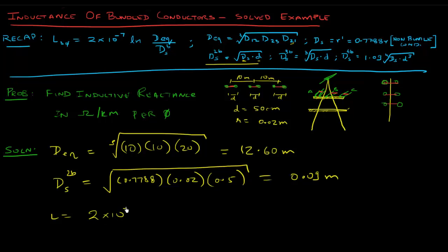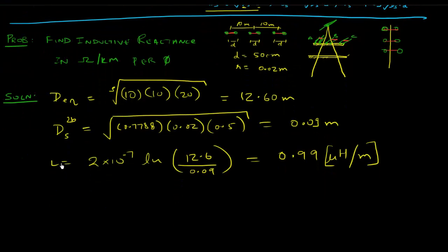Now our L becomes 2 into 10 to the power minus 7 ln of 12.6 over 0.09, which should give us something like 0.99 microhenries per meter. Now that you have this, you have your L. This is henry, or microhenries per meter, and this is your average per phase. This is your average inductance per phase.